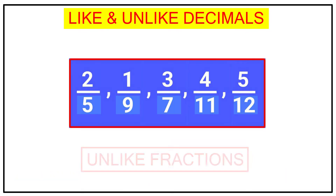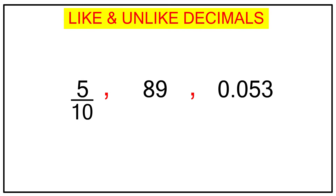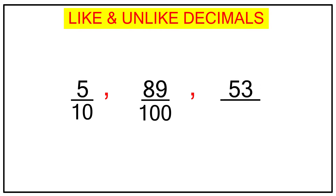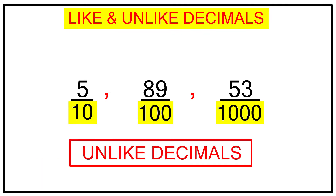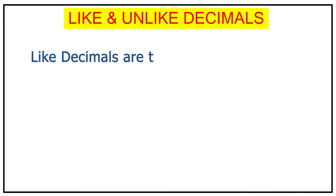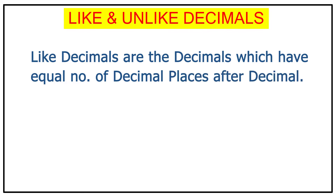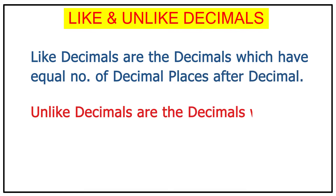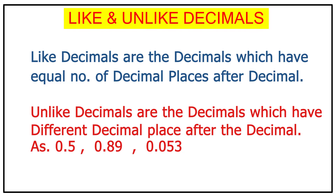In the same way, 0.5 in fraction form is 5 over 10; 0.89 is 89 over 100; and 0.053 is 53 over 1000. If I compare these, the denominators are ten, hundred, and thousand — which are not the same — so this series consists of unlike decimals. To conclude: like decimals are decimals which have an equal number of decimal places after the decimal point, whereas unlike decimals are decimals which have different numbers of decimal places, like 0.5, 0.89, and 0.053.